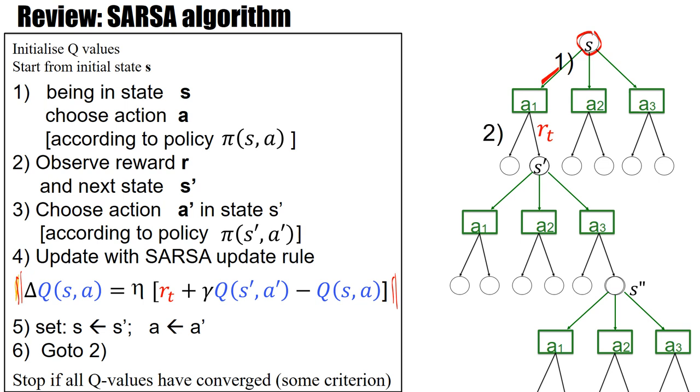Then we observe the reward. We observe the next state S prime. In this state again, we have to choose the next action. And once we have chosen this action, then we actually have the information necessary for the update of the Q values. So now we know we are on this branch so we can read off the Q value Q of S prime A prime. And then we use this to update the Q value at the branch up there.